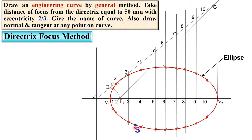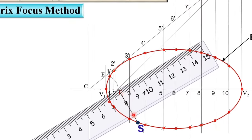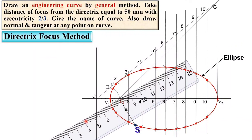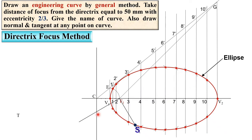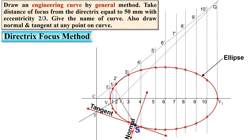First, join S to F1. Then draw a line perpendicular to SF1, which you can do with the help of the scale by matching the long line of the scale to F1S. This perpendicular line must pass through F1 and will intersect the directrix line at a point. Mark it as T. Join T to S with the scale — that will be your tangent. Perpendicular to the tangent is your normal. This completes the answer: normal and tangent at any point on the ellipse.